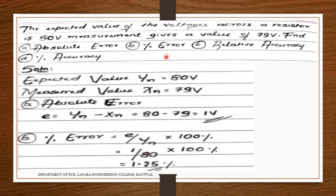To solve this problem, first write the given values: expected value y_n = 80 volts, measured value x_n = 79 volts. To find the absolute error: e = expected value y_n minus measured value x_n, that is 80 minus 79 = 1 volt. So the absolute error is 1 volt.